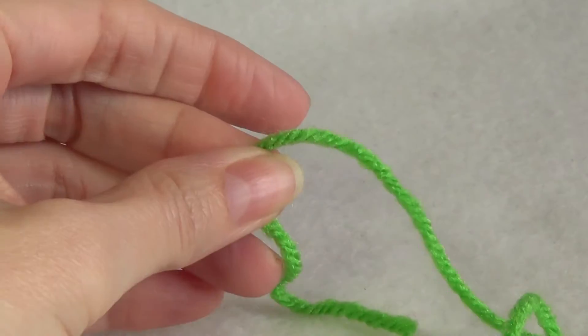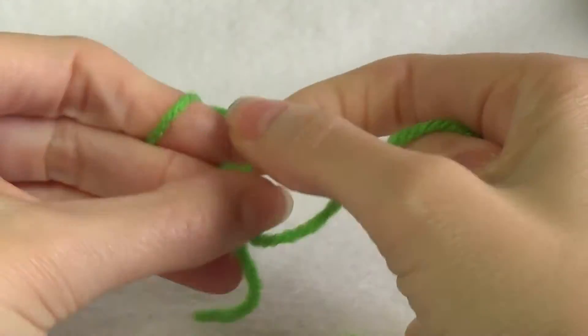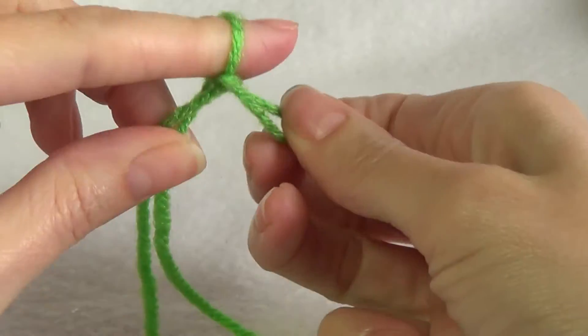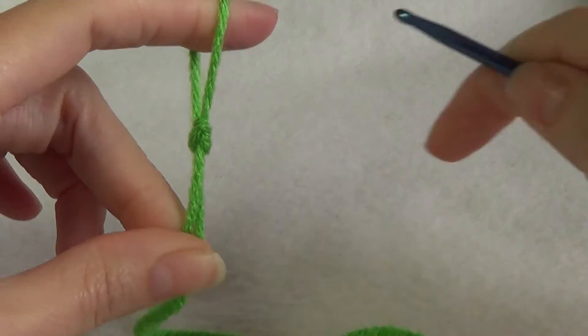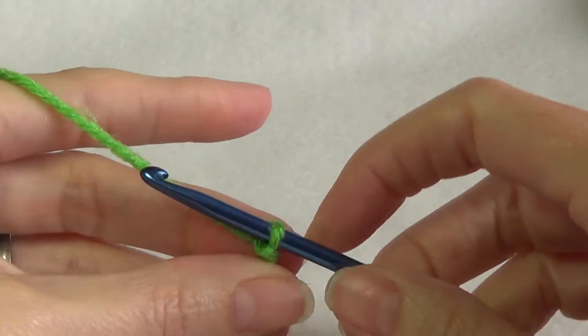So to start off we're going to need a slip knot. There are plenty of ways to do that. Putting our slip knot on our hook, we're going to chain 10.